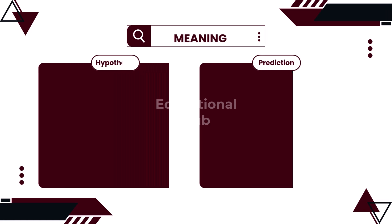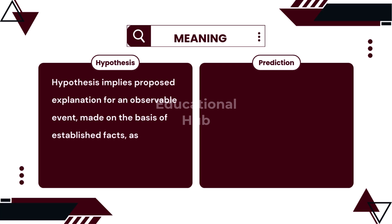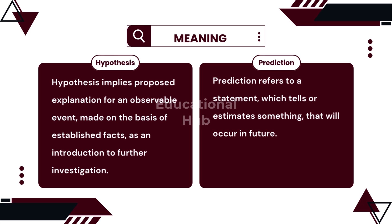1. A propounded explanation for an observable occurrence, established on the basis of established facts as an introduction to the further study, is known as the hypothesis. A statement which tells or estimates something that will occur in future is known as the prediction.